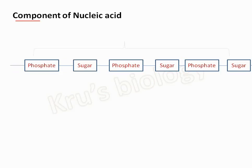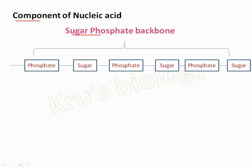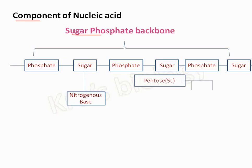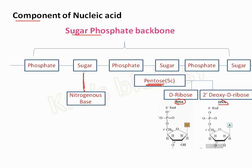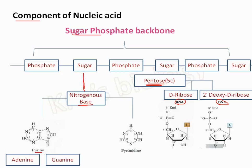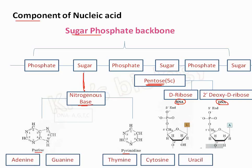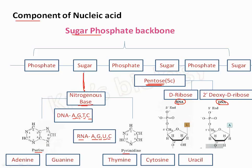Now we are going to talk about the components of nucleic acid. It contains a phosphate group and a sugar molecule that make the sugar-phosphate backbone, and the third component is the base attached to the sugar molecule. The sugar is a pentose containing five carbons. In RNA, ribose sugar is present, and in DNA, deoxyribose sugar is present. Nitrogenous bases are purines — adenine and guanine — and pyrimidines — thymine, cytosine, and uracil. In DNA, adenine, guanine, thymine, and cytosine are present; in RNA, adenine, guanine, uracil, and cytosine are present.